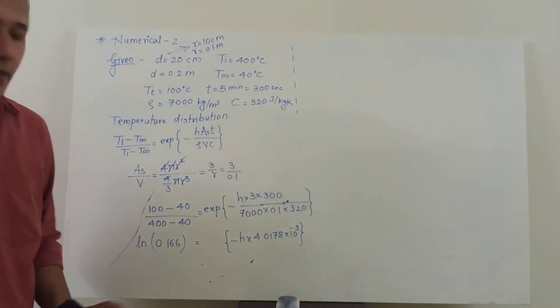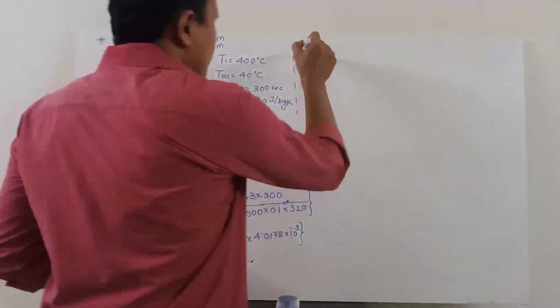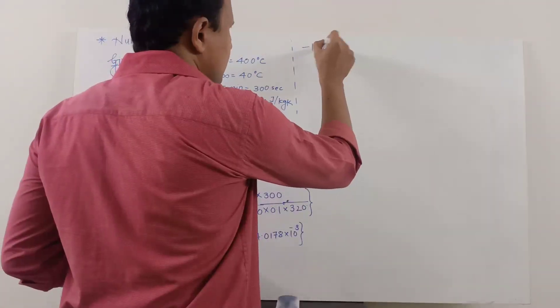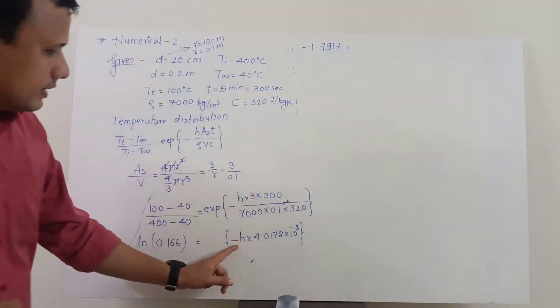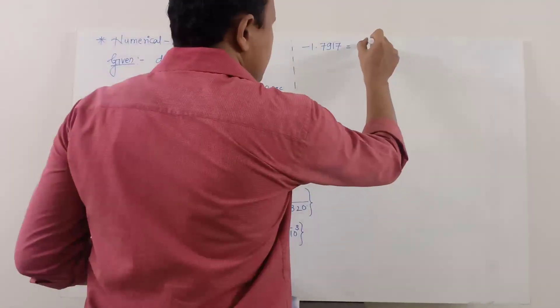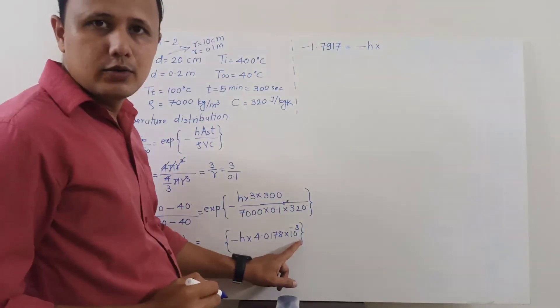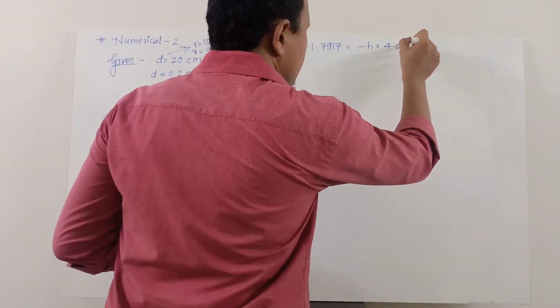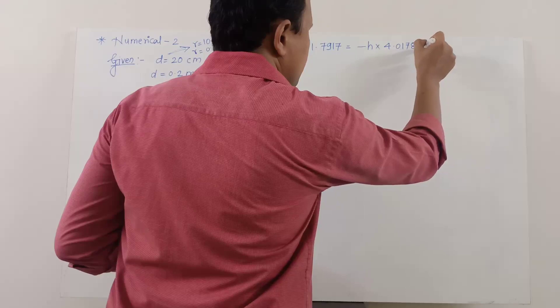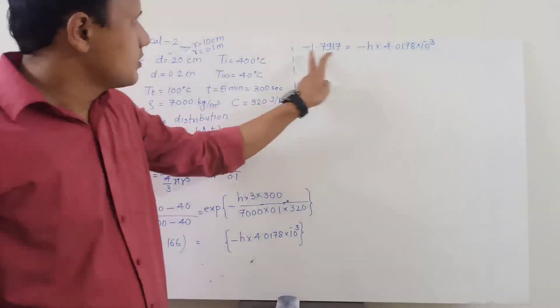So I will omit this step, so ultimately if I extract it on this side, it will become ln of this quantity and this natural log of 0.166 will be minus 1.7917. It will be equal to on the right hand side the remaining quantity, minus h multiplied by 4.0178 into 10 raise to minus 3.